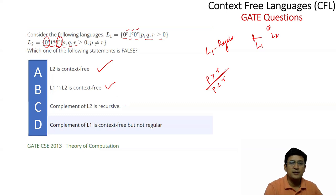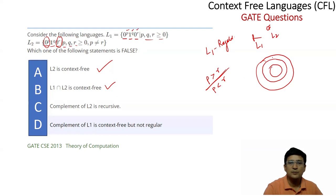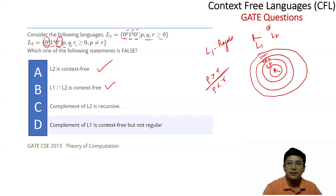Regarding: complement of L2 is recursive. Let's consider the Chomsky hierarchy: regular language is at the bottom, then context-free, then context-sensitive, then recursive and recursively enumerable. If you take the complement of a context-free language, the complement falls within the recursive portion of the hierarchy. So the statement that complement of L2 is recursive is true.